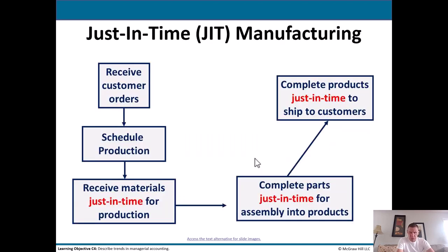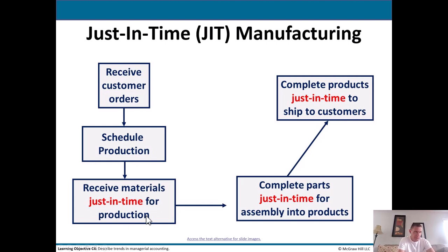Just a brief introduction to JIT — just-in-time manufacturing. This is a Japanese Kaizen-type concept. The idea is you don't keep a lot of material on hand — stuff comes in just in time. You receive customer orders, schedule production, and receive materials just in time for production. That's a bit risky — what if a truck overturns or a train derails? Some companies keep safety stock to mitigate that. You complete products just in time to ship to customers. The idea is it cuts down on inventory storage costs — it's cheaper and leaner, but it does come with a little more risk.